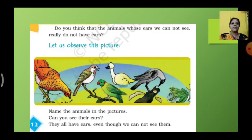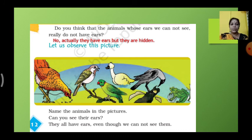Next. Do you think that animals whose ears we cannot see really do not have ears? You think like that? No, they have ears. Actually they have ears but they are hidden. We can't see them. Let us observe this picture. Name the animals in the picture. Can you see their ears?